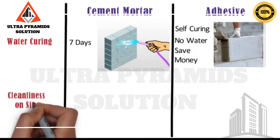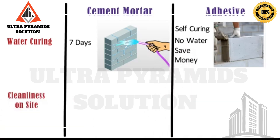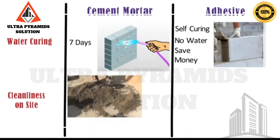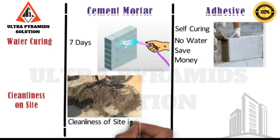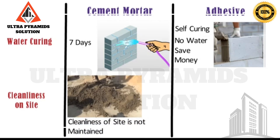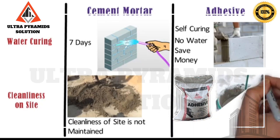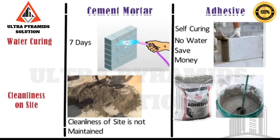Cleanliness on site: In case of conventional mortar, due to mixing of raw materials such as cement, sand, and water on site and curing, the cleanliness of the site is not maintained. Whereas, AAC block adhesive comes in premix form — only water has to be added at site. Due to this and its self-curing nature, the cleanliness of the site is maintained.